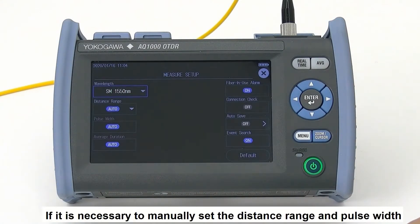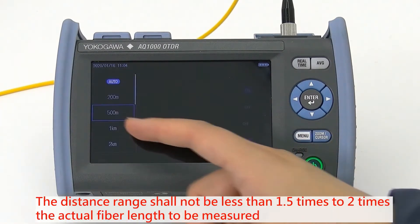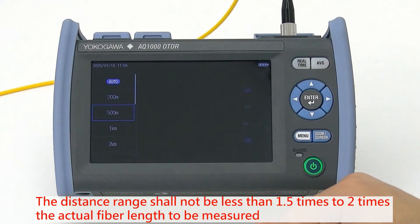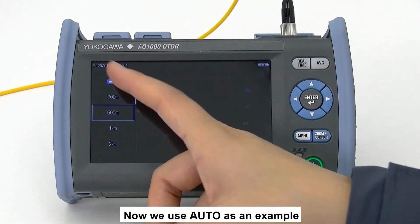If necessary to manually set the distance range and pulse width, the distance range should not be less than 1.5 to 2 times the actual fiber length to be measured. Now, we use the auto as an example.